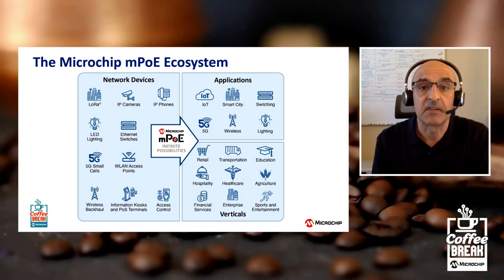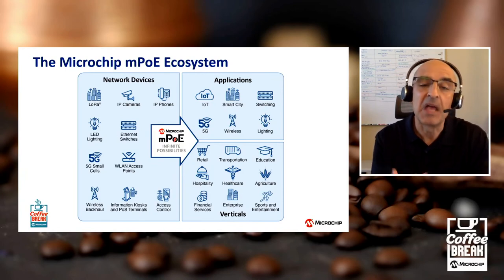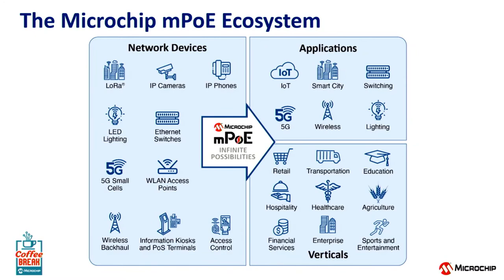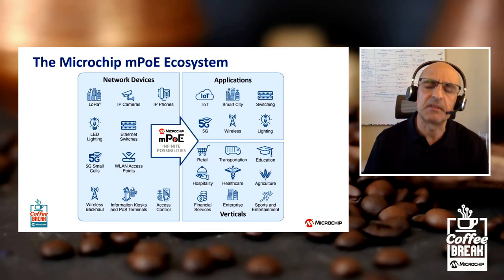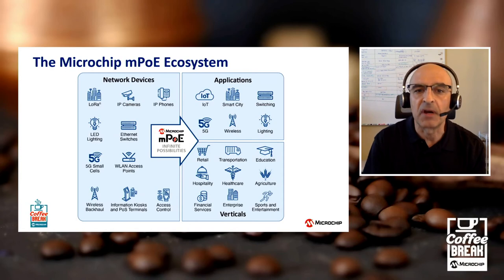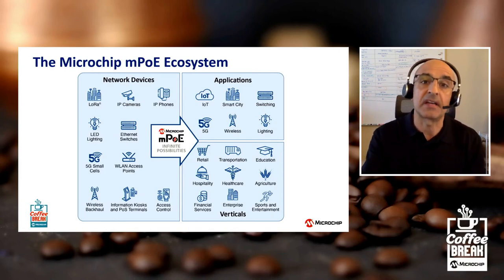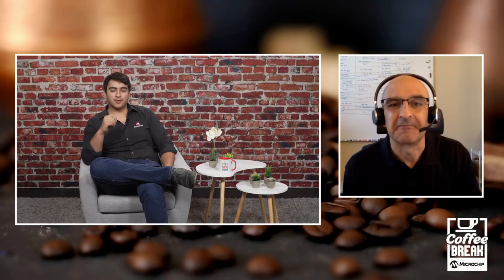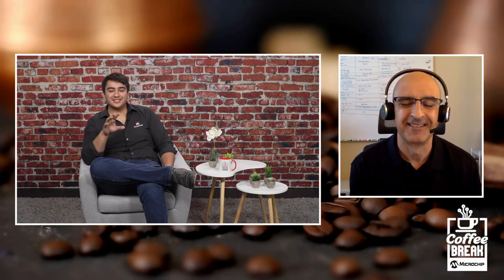Where do we see Microchip and PoE fitting in industry? The PoE ecosystem comprises various network devices, applications, and vertical markets. Key applications are IP phones, IP cameras, and Wi-Fi access points — the main bread-and-butter. But we're also seeing new applications: kiosks, point-of-sale terminals, and 5G small cells. As the 5G network is being rolled out, many of these small cells are powered by PoE. Vertical markets include retail, healthcare, enterprise, sports venues, and anywhere rolling out Wi-Fi access points, IP security cameras, or card key access.